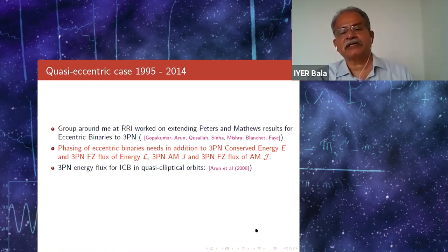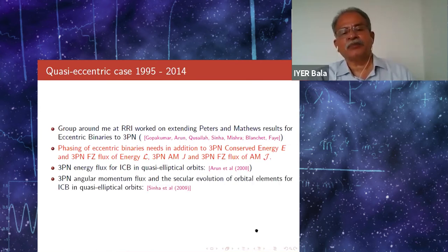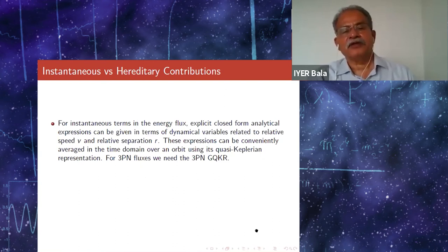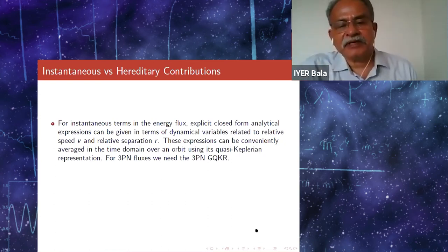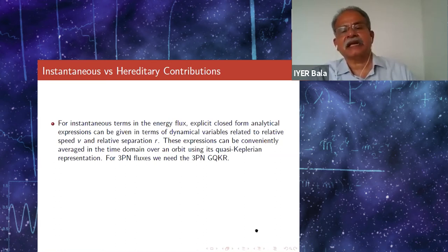For example, the energy flux was calculated by Arun and Iusayla, and the angular momentum flux by Chern, who then used it to calculate the secular evolution of orbital elements for binaries in quasi-elliptical orbits. When you look at the technical complications for the eccentric orbits, you realize that there are two: the instantaneous terms and the hereditary terms will need to be dealt with in slightly different ways. For the instantaneous terms in the energy flux, explicit closed form expressions can be given in terms of the dynamical variables. You can then convert it and average it over an orbit by using the quasi-Keplerian representation, which was given by Natalie Deruelle and Thibaut during their study of the binary pulsar.